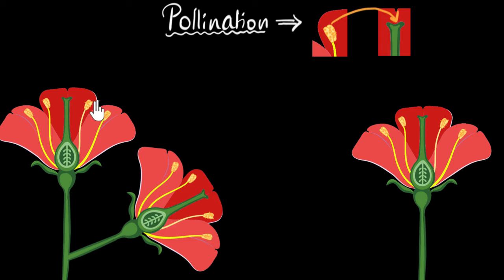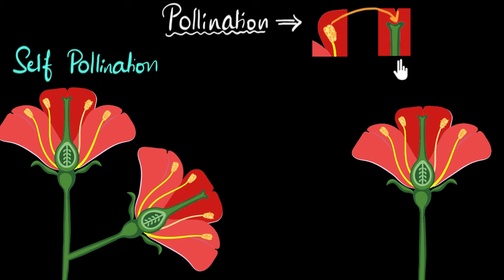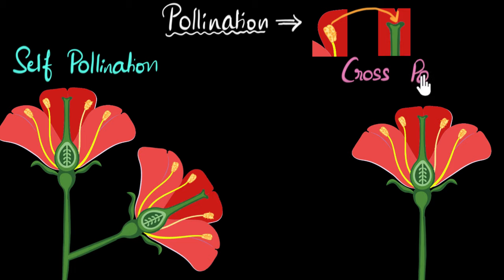Based on whether the pollen grains are transferred within the same plant, or transferred between two different plants, we can classify them into two kinds. The first one is self-pollination, and the second one is cross-pollination.